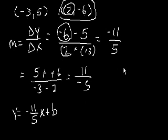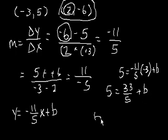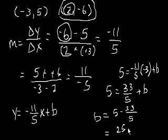Let's take the first pair. So 5 is y. So we say 5 equals negative 11 over 5 times negative 3, right? I just put the x in for x plus b. So just simplifying that I get 5 is equal to 33 over 5 plus b. Or b is equal to 5 minus 33 over 5. And this equals 25 minus 33 over 5. 25 minus 33 is minus 8 over 5.